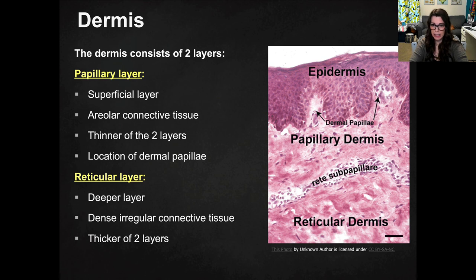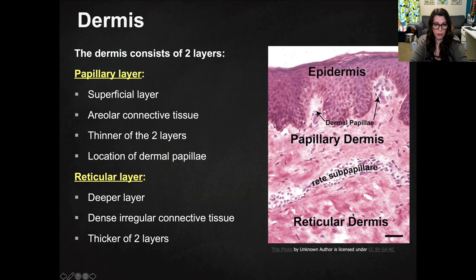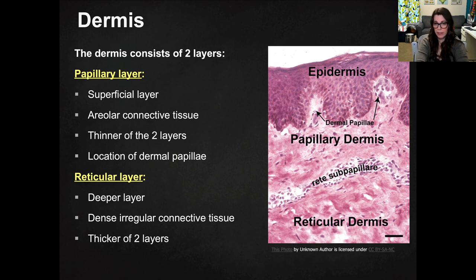Then you have the reticular layer, which is down here — you can't see all of it because I wanted you to be able to see the dermal papillae. This is the deeper layer, closer to the center of the structure, and it consists of dense irregular connective tissue. That's really all you need to know about the dermis.